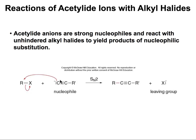If we have a primary alkyl halide, the acetylide is a strong nucleophile, and primary alkyl halides always do SN2 reactions — nucleophile, electrophile, leaving group, SN2 reaction. We have a strong nucleophile with a negative charge, a primary alkyl halide, and a good leaving group, so it proceeds via SN2.